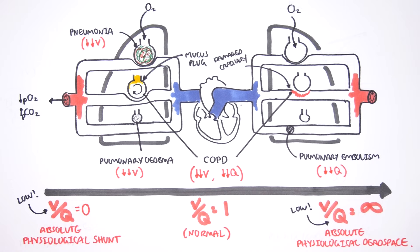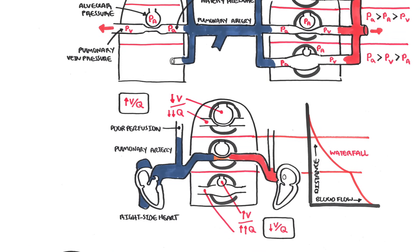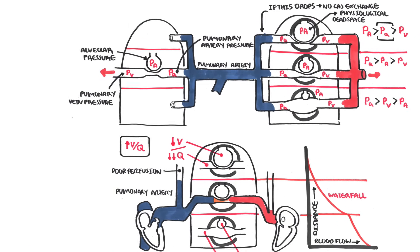The trachea, for example, is dead space because air flows through it but the trachea does not participate in gas exchange. I hope this video on ventilation-perfusion makes sense. Thank you for watching.